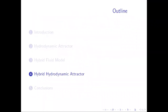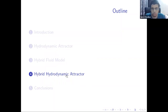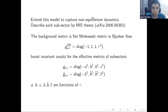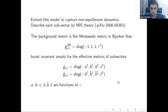Now I come to the last part of the talk: the results of our paper finding the hydrodynamic attractor in the hybrid fluid model. In the previous paper, this model was studied only in the equilibrium case. We have extended this model to capture the full non-equilibrium dynamics of the hybrid system by describing each subsector using MIS theory. We work in the Bjorken flow setup, with a flat Minkowski background metric written in Milne coordinates. We make a boost-invariance ansatz for the effective metrics of each subsector, where all metric elements are functions only of the proper time tau, the Lorentz scalar.